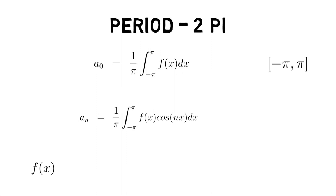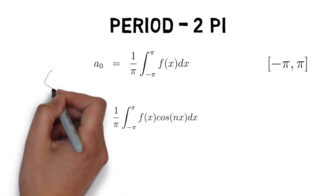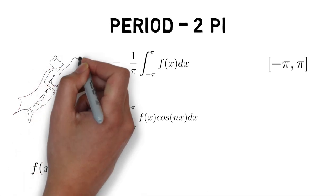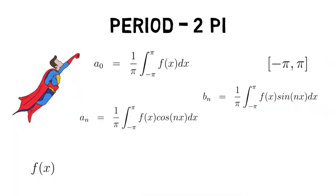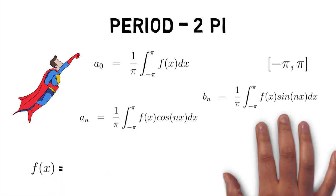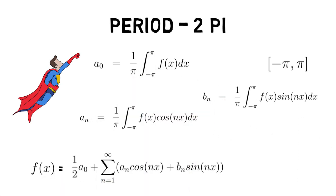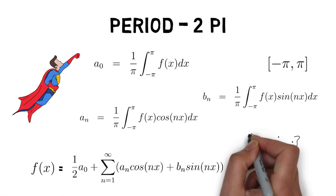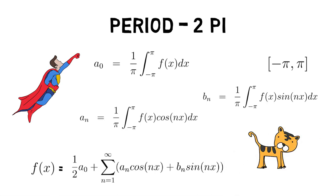An equals 1 upon π into integral of f into cos nx dx from minus π to π, and bn equals 1 upon π into integral of f of x into sin nx dx from minus π to π. Then the trigonometric series a0 upon 2 plus summation of an into cos nx plus bn into sin nx from n equals 1 to infinity is called the Fourier series of function f of x.